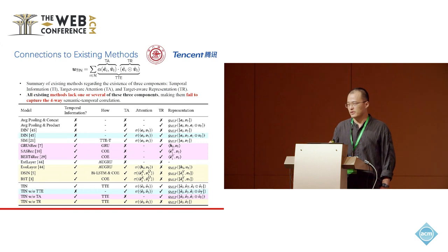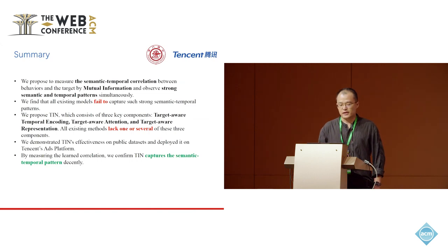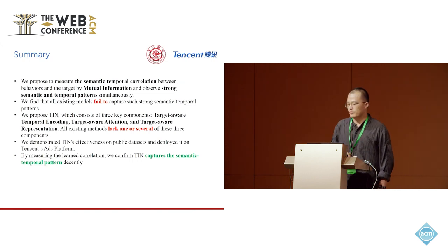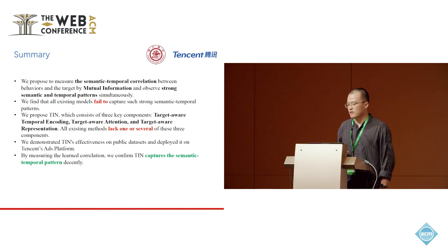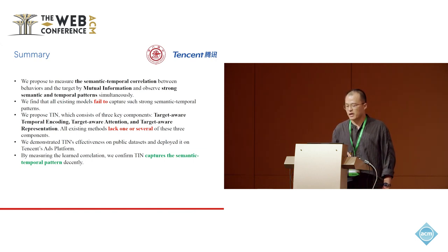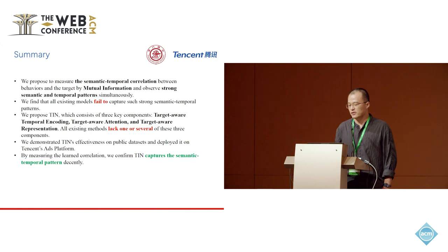In summary, we propose to measure the semantic temporal correlation between behaviors and the target by mutual information, and observe strong semantic and temporal patterns simultaneously. We find that all existing models fail to capture such patterns, and we propose TRN, which consists of three key components: target-aware temporal encoding, target-aware attention, and target-aware representation — components that all existing methods lack one or several of. We demonstrate TRN's effectiveness on public datasets, deploy it on Tencent's platform, and confirm through the learned correlation visualization that TRN captures the patterns very well.